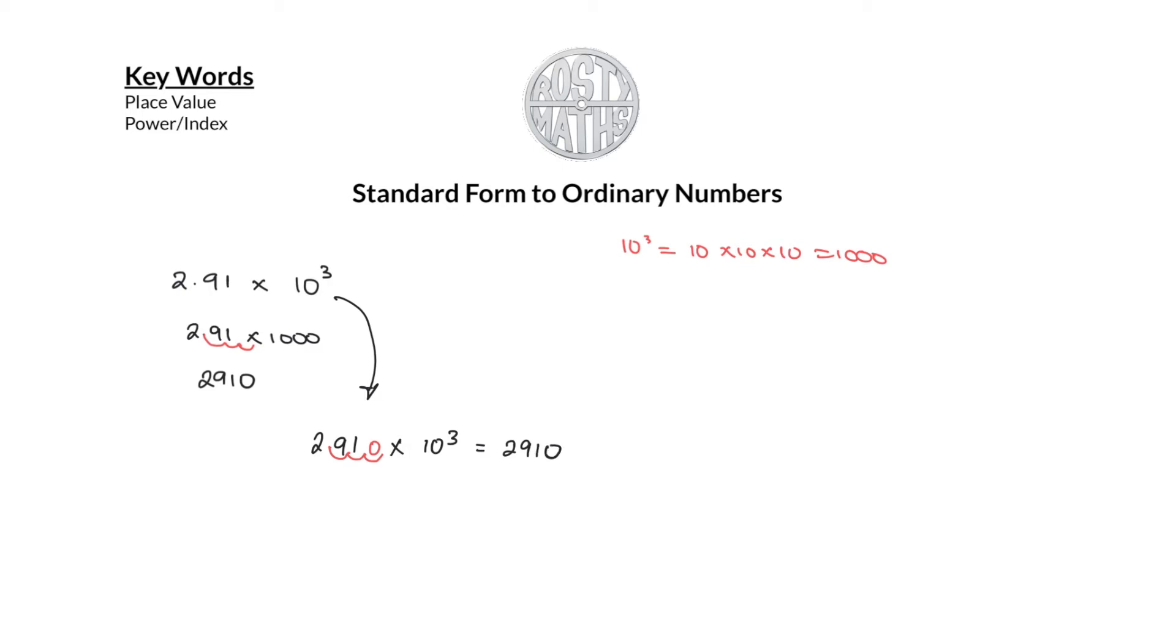What about if that number has a negative power? So let's go for the same 2.91 and we're timesing this by 10 to the negative three instead. Then what does this mean? Let's do the proper maths first, and then we will get on to doing the trick after. So again, this is still actually 10 times 10 times 10, but because it's negative—we're going to see that in another topic I have coming up called indices—10 to the power minus 3 actually means 1 over a thousand.